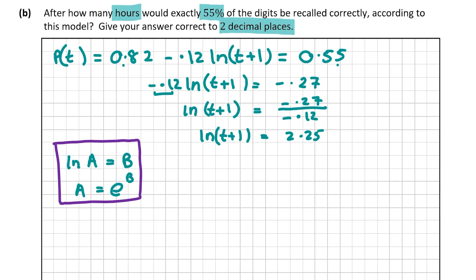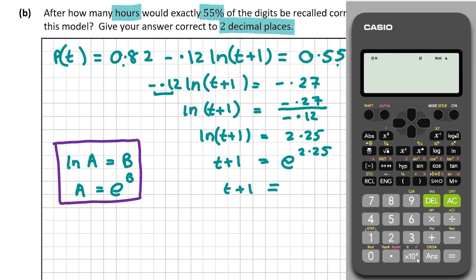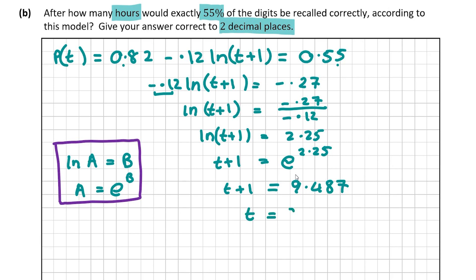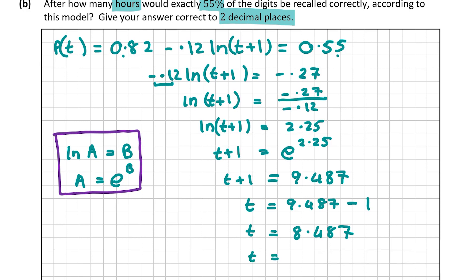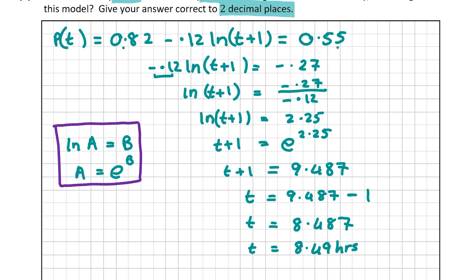Applying the rule: T + 1 is our A and 2.25 is our B, so T + 1 = e^2.25. Using the calculator, e^2.25 = 9.487, so T = 9.487 minus 1 = 8.487. Correct to two decimal places, T = 8.49 hours. In context, this means after 8.49 hours the student will recall 55% of the digits. This is worth 10 marks.